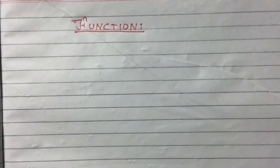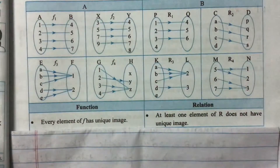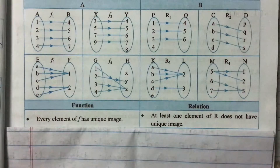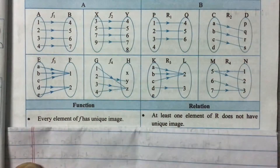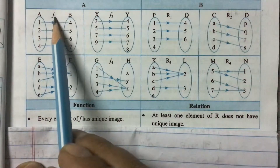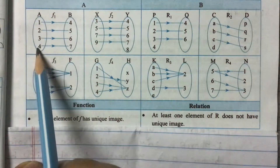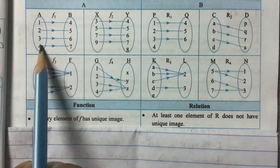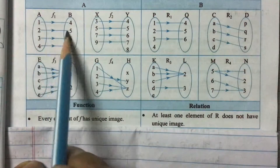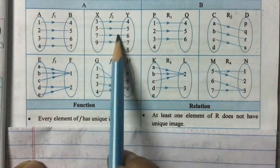Today I am going to teach you about functions. Before explaining functions, I would like to show you some examples of relations from which we can define a function. Look at this first example, f1 — every element of the domain, 1, 2, 3, 4, each has one and only one image in the codomain.